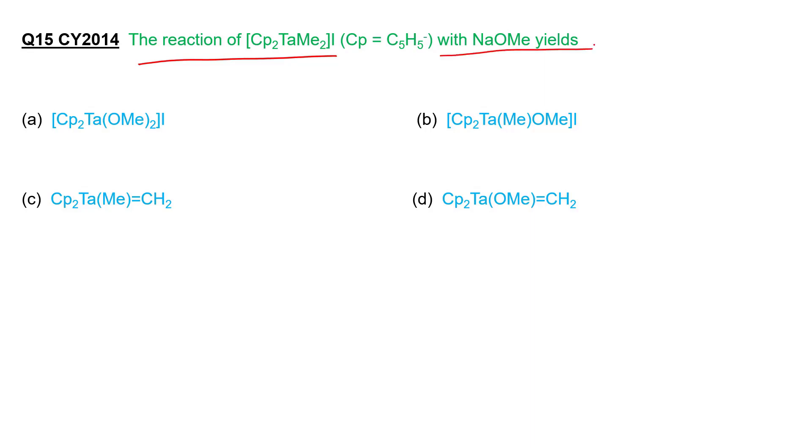The options are: A) Cp2TaMe(OMe)I, B) Cp2Ta(Me)OMeI, C) Cp2Ta(Me)=CH2, and D) Cp2Ta(OMe)=CH2. You have to choose the correct answer among these four options.